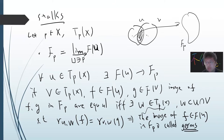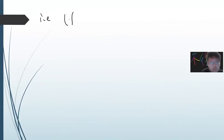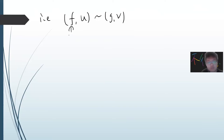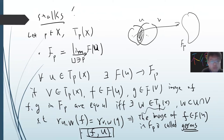The image of f from F(U) in F_p is called a germ. The tuple (f, U) represents a germ; two tuples (f, U) and (g, V) define the same germ if there exists W ⊆ U ∩ V with R_{UW}(f) = R_{VW}(g). So I have introduced the stalk and germs.